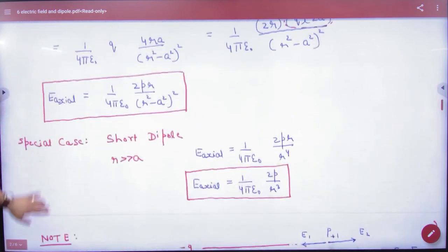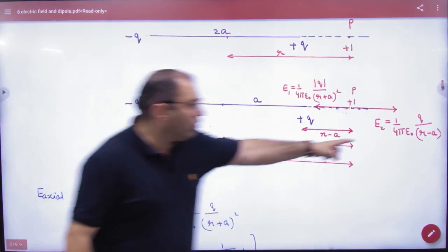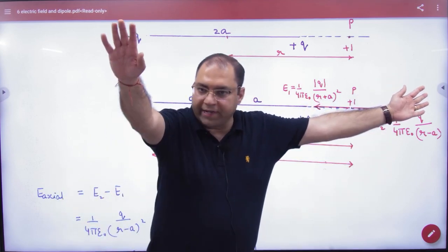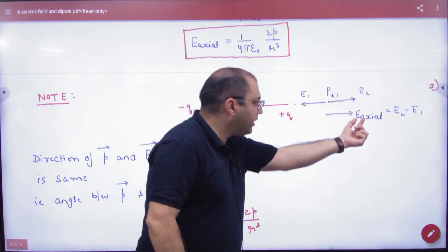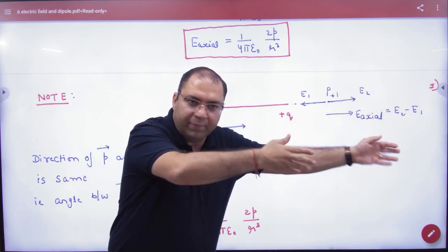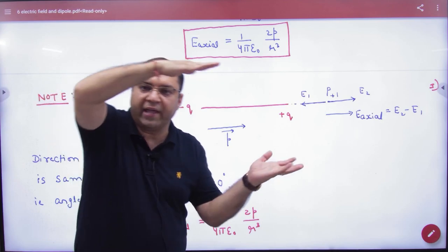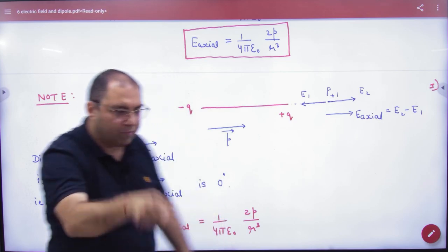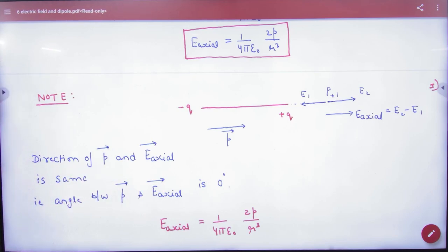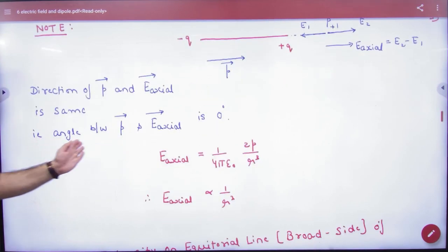Question comes: which value was bigger? Right side. So the net E is towards the right. What is the direction of the P vector? From minus to plus. P vector is minus to plus, net E is to the right. Both are in the same direction. What is the angle between P vector and E_axial? They are in the same direction, so the angle equals 0 degrees. The E_axial vector and dipole moment are always in the same direction on the axial line.